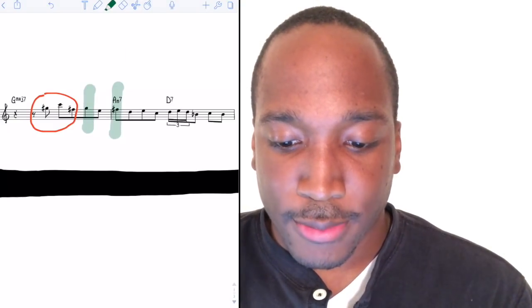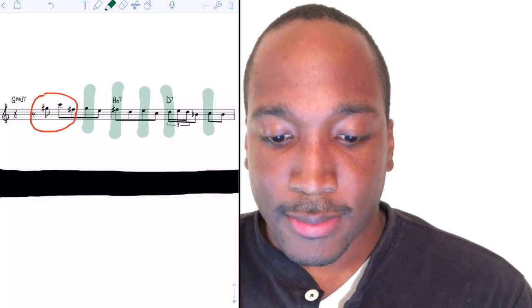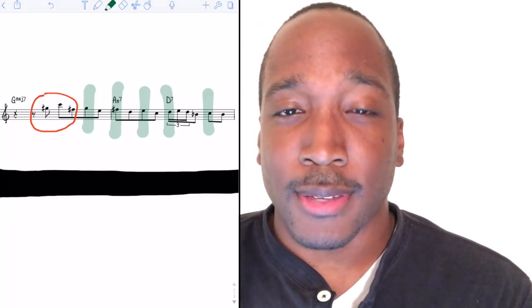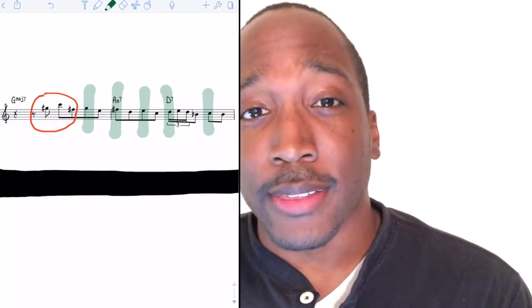So we got G sharp here, we got F sharp, E, D, and C. The reason why I highlighted them is because as improvisers, these downbeats help us outline the changes.